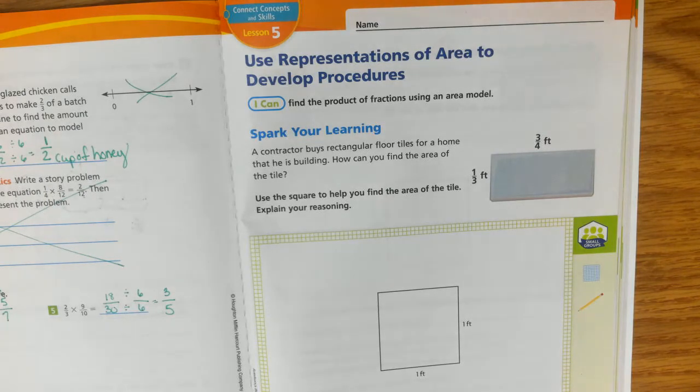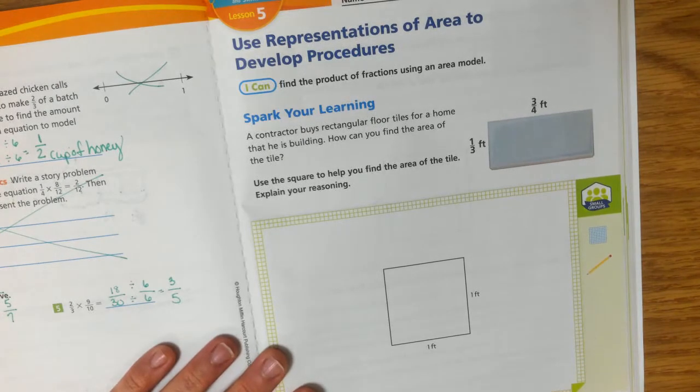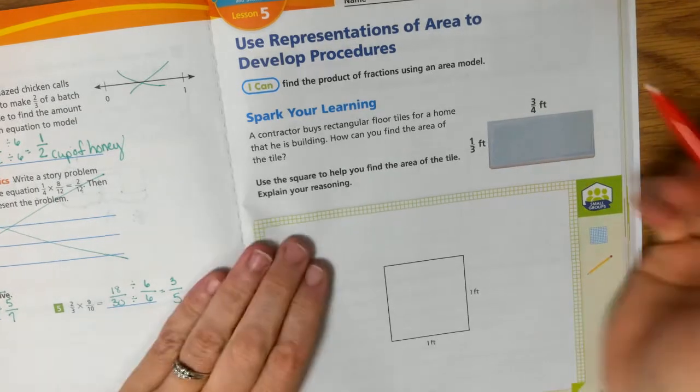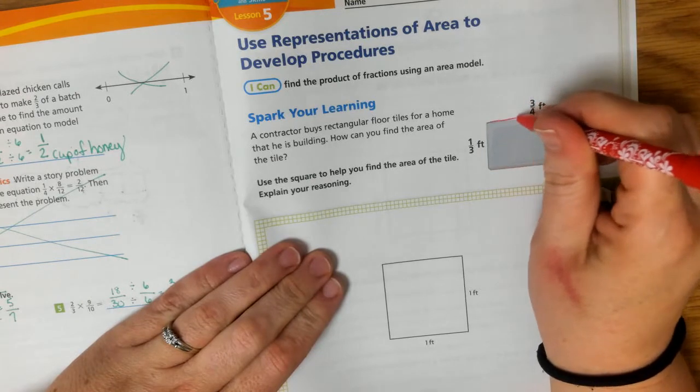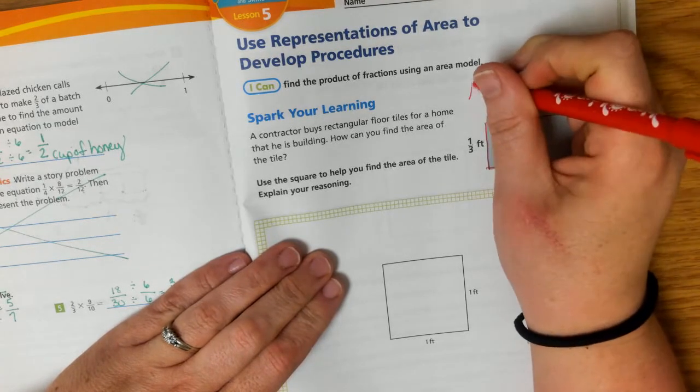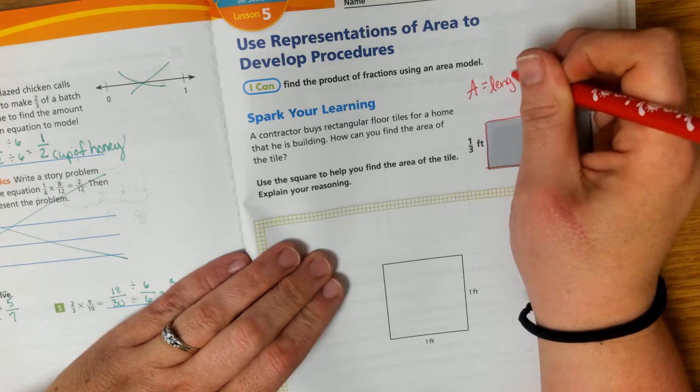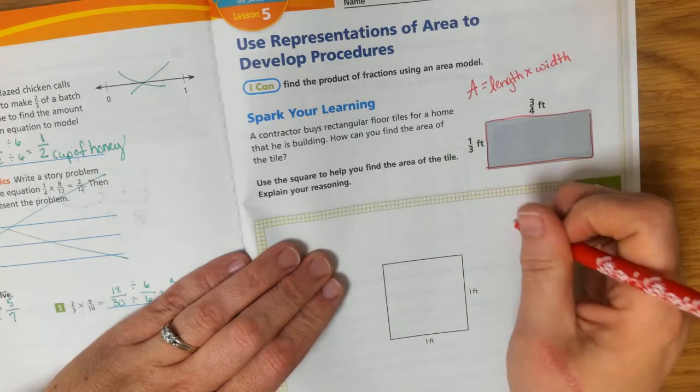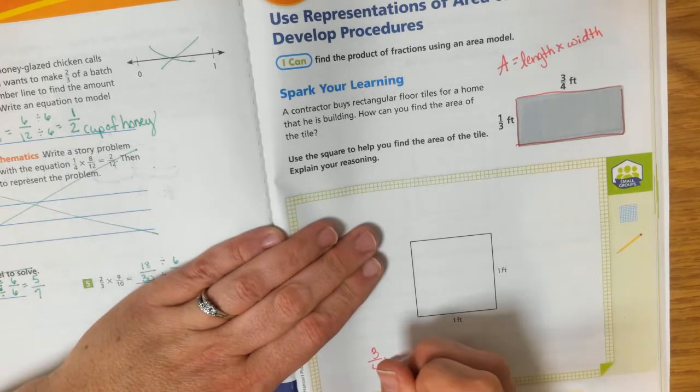OK, so we're going to be doing module eight, lesson five, use representations of area to develop procedures. So basically, we're going to be able to find the product of fractions using an area model. So let's see what that means. If we have a contractor and they buy rectangular floor tiles for a home that he is building, how could we find the area of the tile? So we can see that this tile is three fourths feet by one third feet. Now, to find the area of anything, we multiply length times width, right? Area equals length times the width.